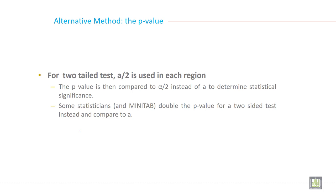For the two-tailed test, alpha by 2 is used in each region. The p-value is then compared to alpha by 2 instead of alpha to determine statistical significance. Some statisticians double the p-value for a two-tailed test instead and compare to alpha.